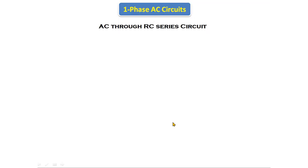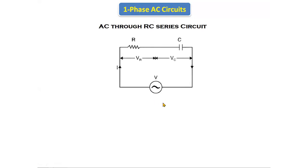In the RC series circuit, we will find the impedance value, the phase angle between voltage and current, the impedance triangle, the power triangle, and the phasor diagrams. Let's see the circuit diagram of the RC series circuit. Here, the resistor and the capacitor are both connected in series, which is why it is called an RC series circuit.